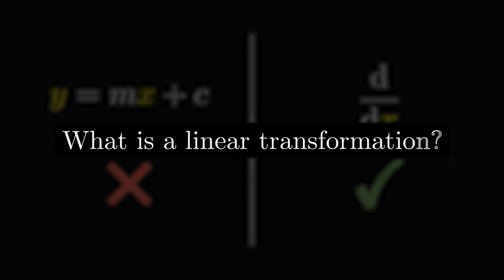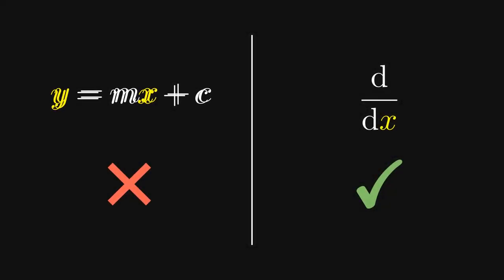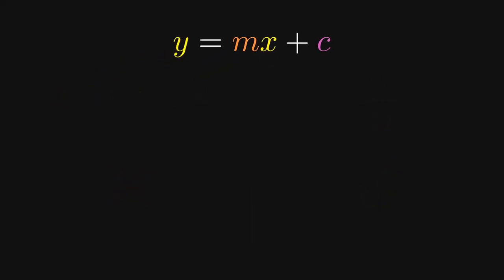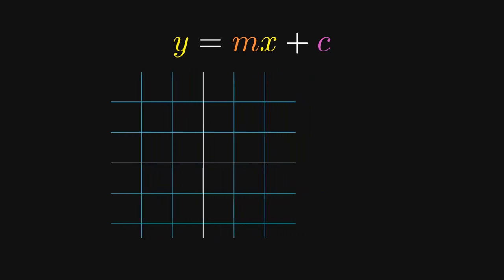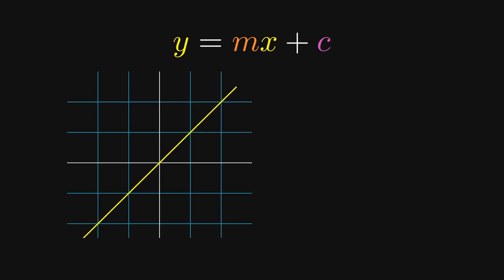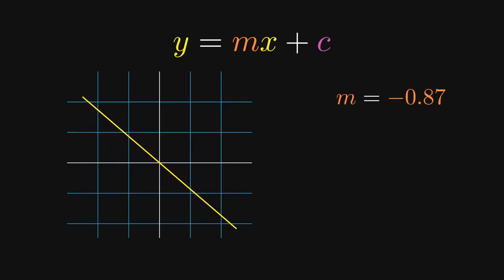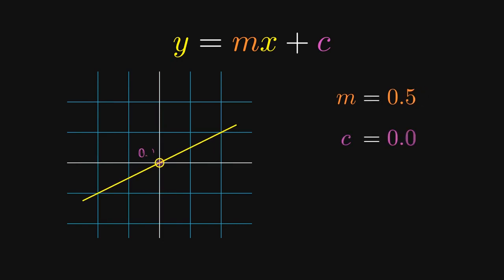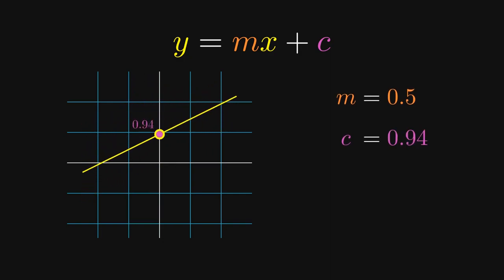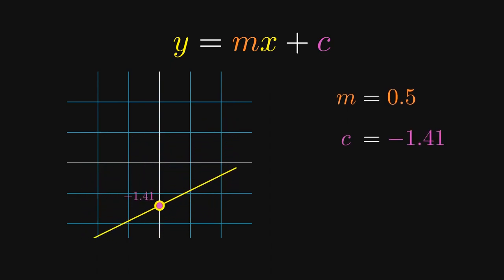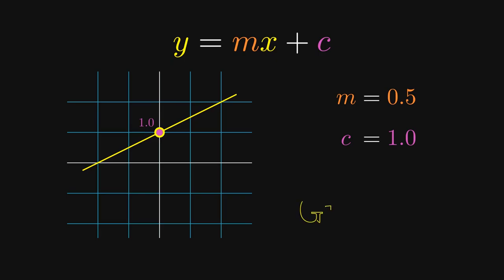What is a linear transformation? Let's first make one thing clear. The equation y equals mx plus c represents a straight line. The quantity m represents the gradient of the line, which measures how steep the line is. The quantity c represents the intercept and encodes the position of the line. In other words, this is the equation of a linear graph. However, this function is not a linear transformation.